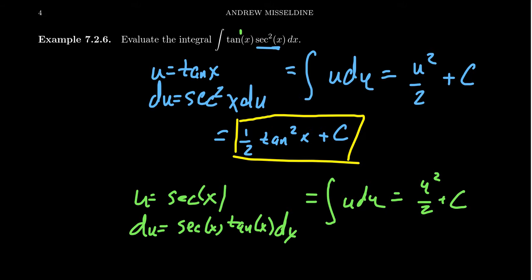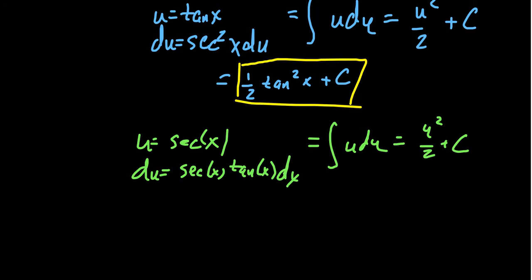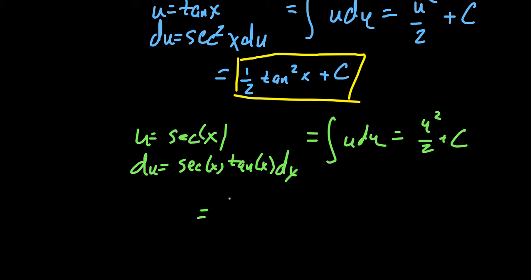But the important difference here is the interpretation of u is different, in which case, when you write that out, you're going to get 1 half secant squared x plus constant. And so this is the anti-derivative. And so then you might look at that for a second, it's like, wait a second. 1 half tangent squared versus 1 half secant squared. How can those both be the anti-derivatives? Those are different functions.